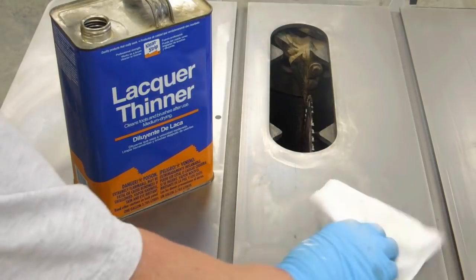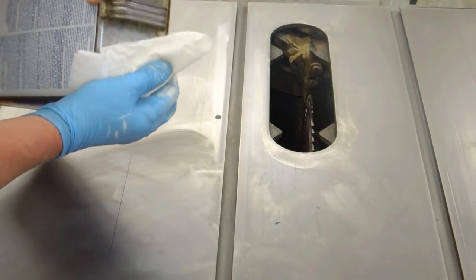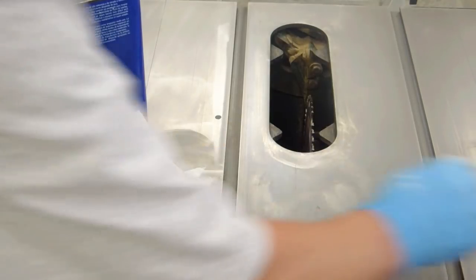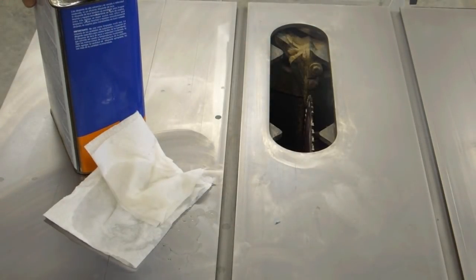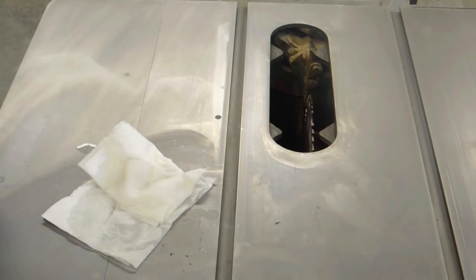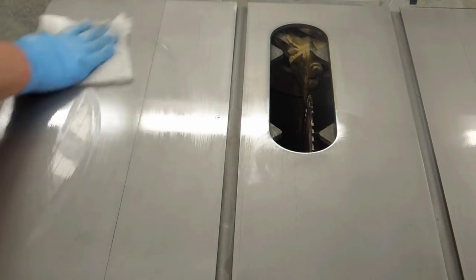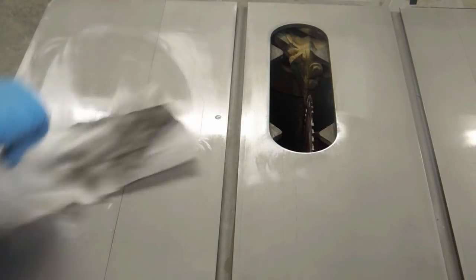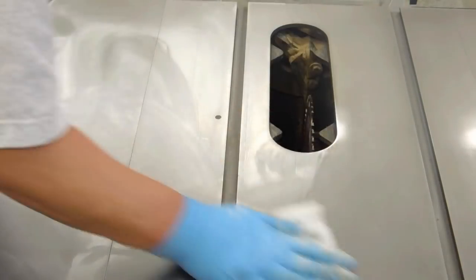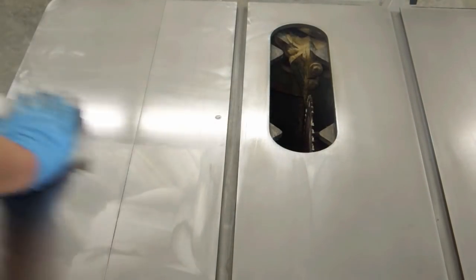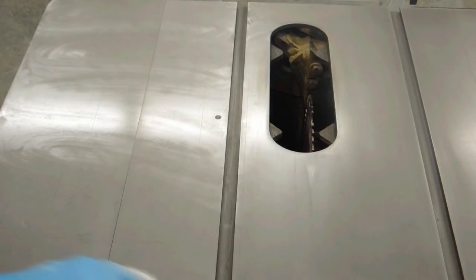I'm going to use a little lacquer thinner. These gloves with lacquer thinner don't get along very well. So I do this as quickly as I can. And I'm not trying to sell it to anybody. I'm just trying to clean it up so the rust doesn't get to it. I'll let that dry. I'll put some wax on it and we'll see how it looks.